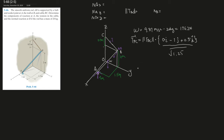Using the sum of forces equations, once you find one component you can use it to find the others — a domino effect. I like to list everything. In the x-direction, NAx must equal NAB because those are the only two forces going in the x-direction.